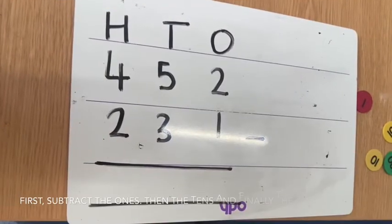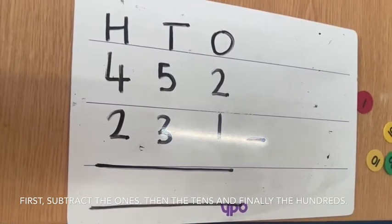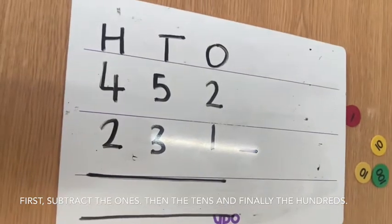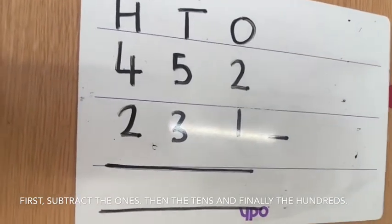First, subtract the ones. You always start with these first. 2 take away 1 equals 1.